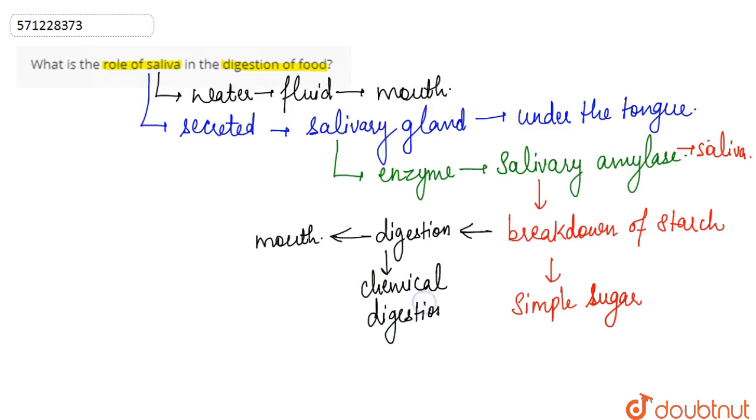Now if we further talk about the role of the saliva apart from the breakdown of starch into simple sugar, it is basically that because it is a watery fluid, it moistens the food and makes its passage easier.